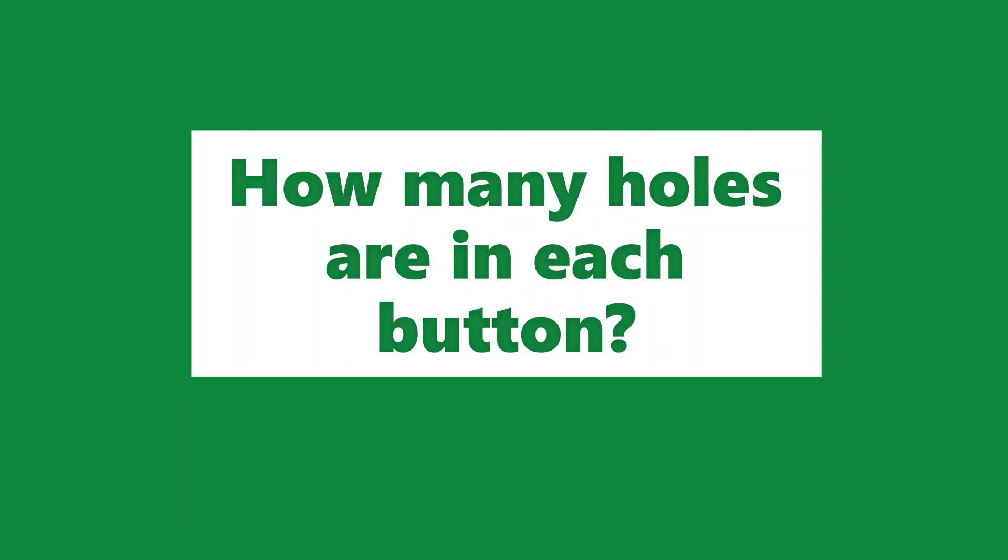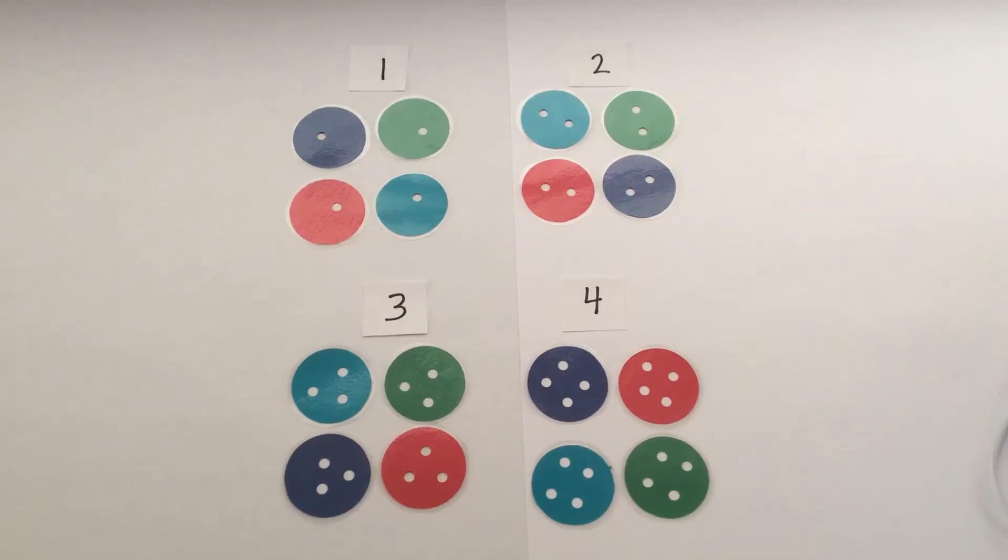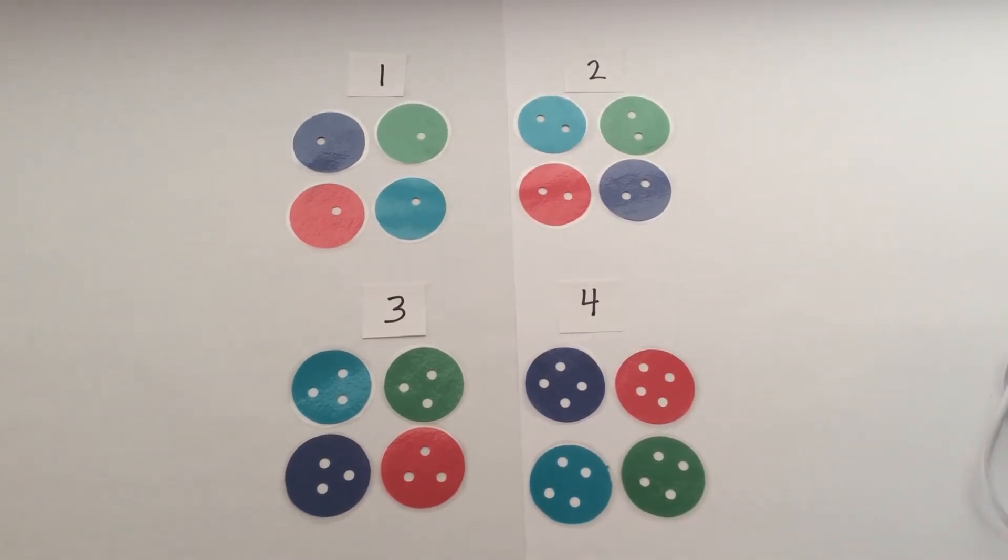Do you notice something on the buttons? Those are button holes. How many holes are in each button? You can sort the buttons by how many holes they have.